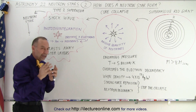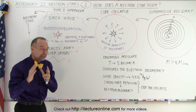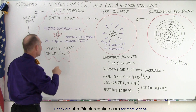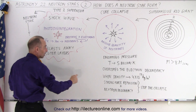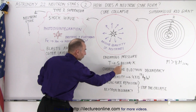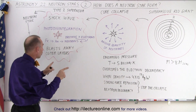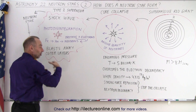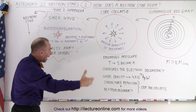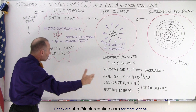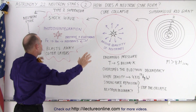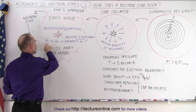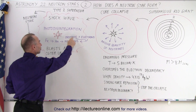Inside the core, we have what we call photodisintegration, which means that the very high-energy gamma ray photons from these enormous temperatures rip through the core and reverse the nuclear fusion process that happened over millions of years — in a fraction of a second. It goes into the core and reverses nuclear fusion from iron back into helium, back into protons and electrons.